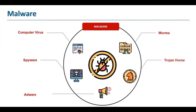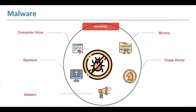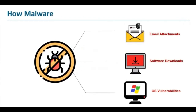First of all, viruses — like their biological namesakes — attach themselves to clean files and infect other clean files. They can spread uncontrollably, damaging a system's core functionality and deleting or corrupting files. They usually appear as executable files that you might have downloaded from the internet.